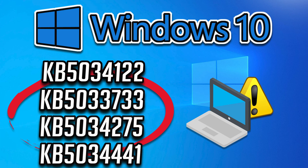The update KB5-034-440 addresses a security vulnerability that could allow attackers to bypass BitLocker encryption by using Windows Recovery Environment. If you are unable to install this important security update, follow the steps of this video to learn how to resolve this problem.